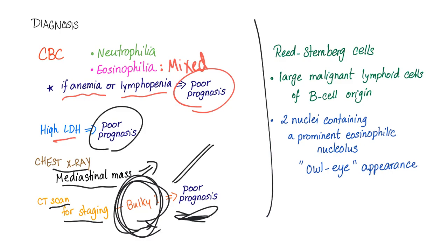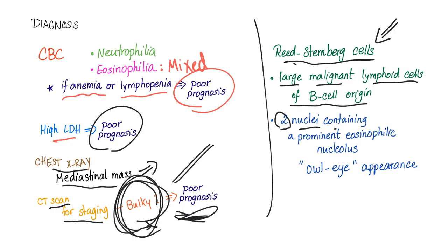When we take a biopsy — which is not a fine needle aspiration but an excisional biopsy or a needle core biopsy — and put it under the microscope, we see the Reed-Sternberg cell in the lymph nodes. They are large, malignant lymphoid cells of B cell origin. They have two nuclei containing a prominent eosinophilic nucleolus, giving the characteristic owl-eye appearance.